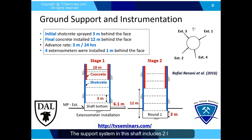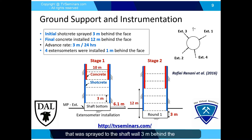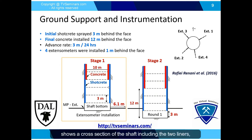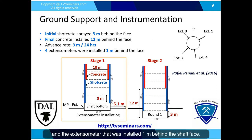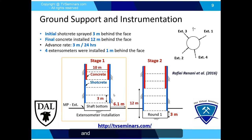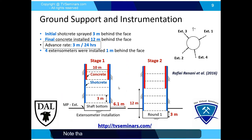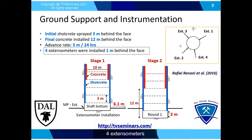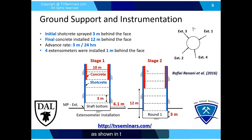The support system in this shaft includes two liners. The first liner is the initial or temporary shotcrete liner sprayed to the shaft wall 3 meters behind the face, and the second is the final concrete liner installed 12 meters behind the face. This figure shows a cross-section of the shaft including both liners, their distances from the shaft face, and the extensometer installed 1 meter behind the shaft face. The liner in blue represents the shotcrete, and the one in red represents the concrete liner. The excavation advance rate is 3 meters per 24 hours, meaning it took 24 hours to advance from one stage to the next.